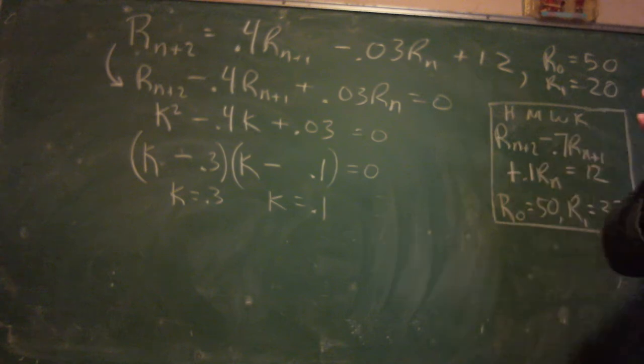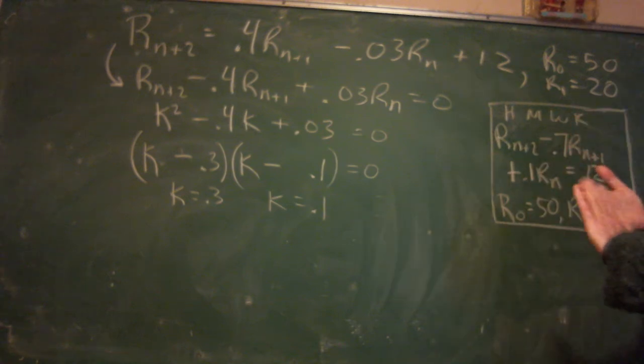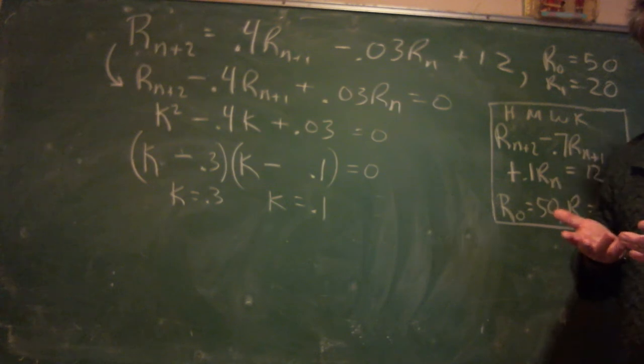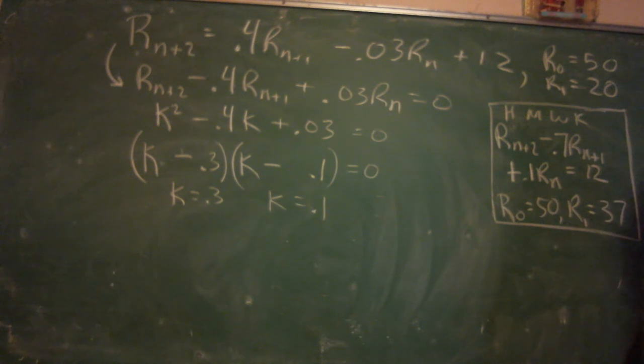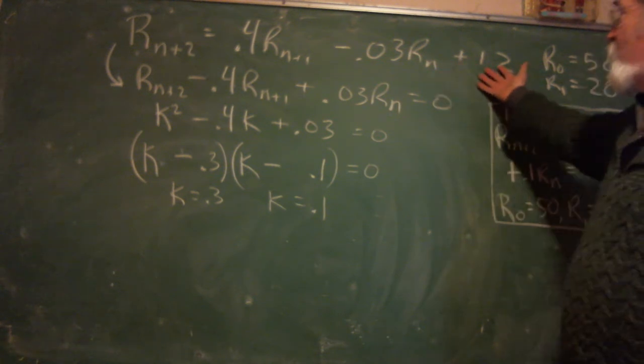That means we're going to get one specific solution, but it's going to be made from two different fundamental solutions. There's going to be something to a power and something else to a power, and they're going to be different. Now, how do we find those two things? Well, that's a big difference in difference equations. We don't use e to the rt. We don't do the continuous. We do this discrete version.